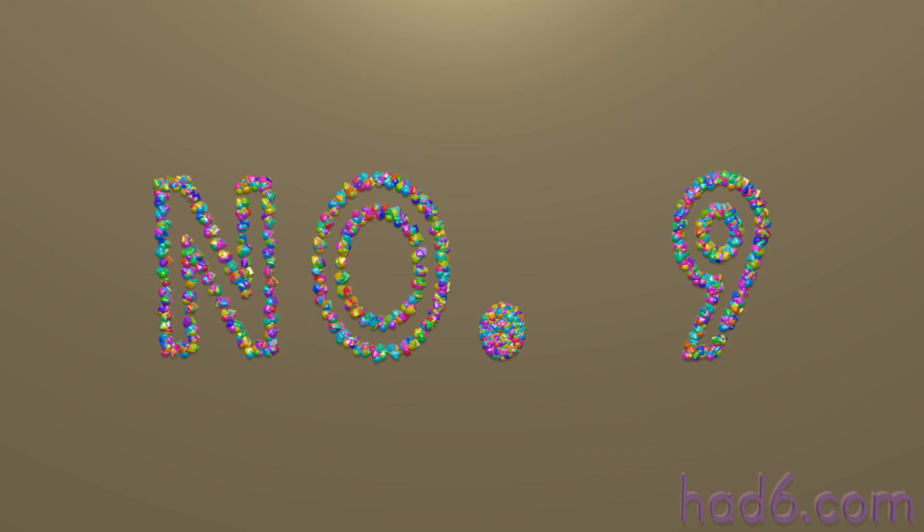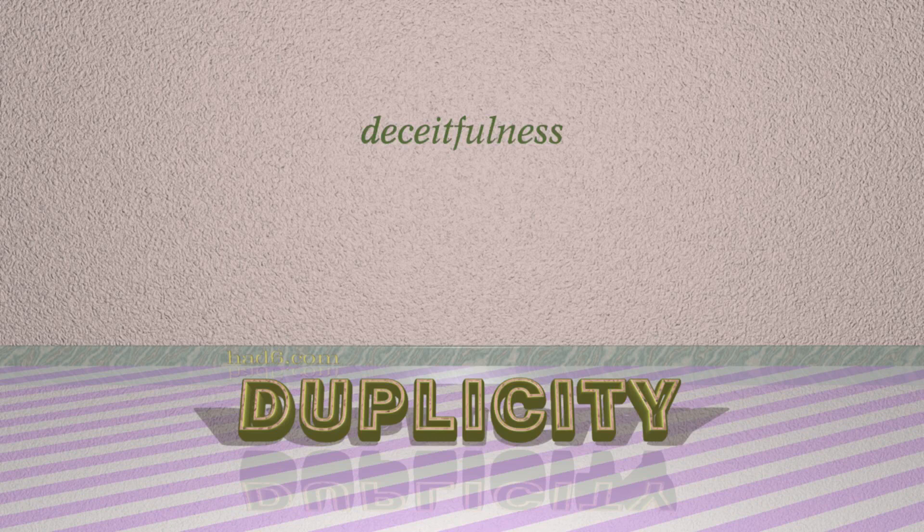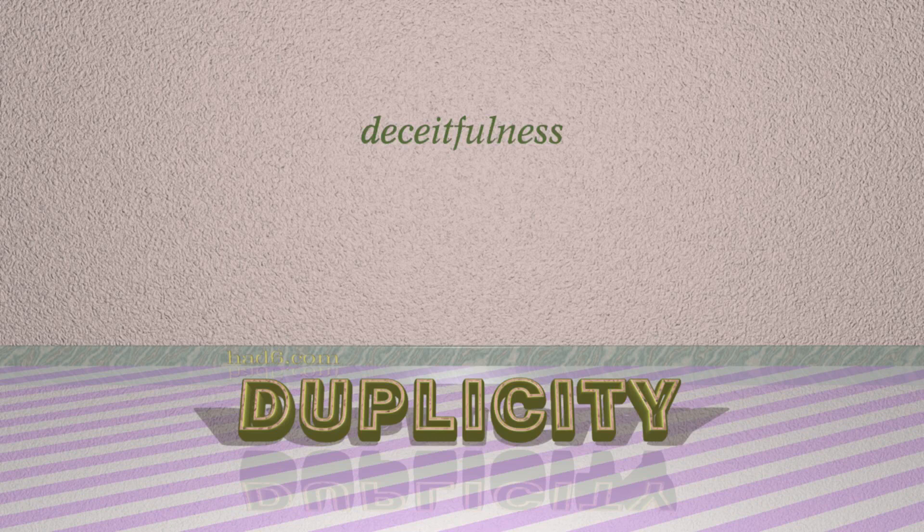Number 9: Duplicity. Which means: Deceitfulness. For example: The president was accused of duplicity in his dealings with congress.